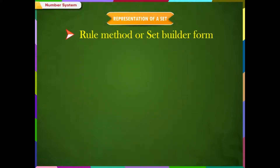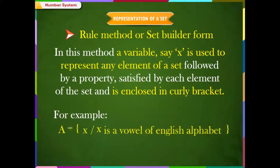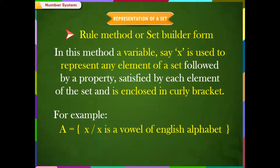Rule method or set builder form: in this method, a variable, say X, is used to represent any element of a set, followed by a property satisfied by each element of the set, and is enclosed in curly brackets. For example, A is equal to {X such that X is a vowel of English alphabet}. B is equal to {Y such that Y is a day of a week}.